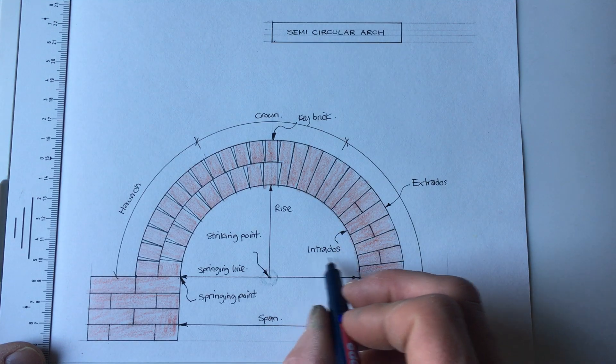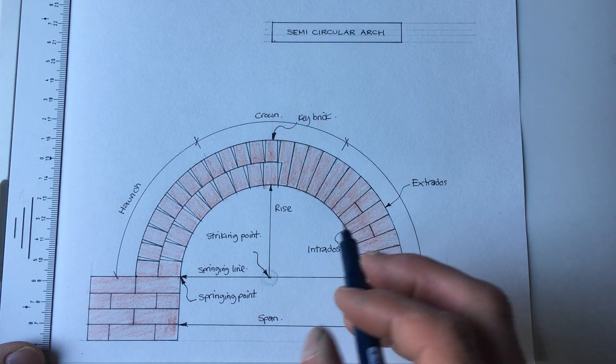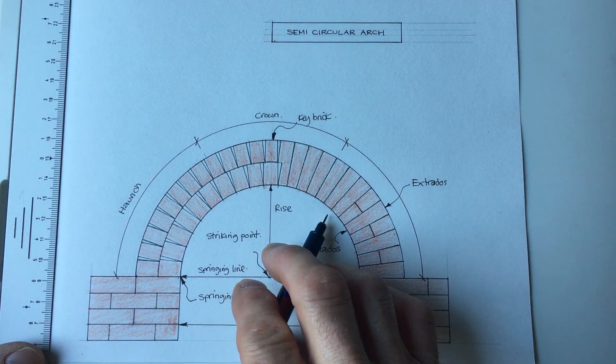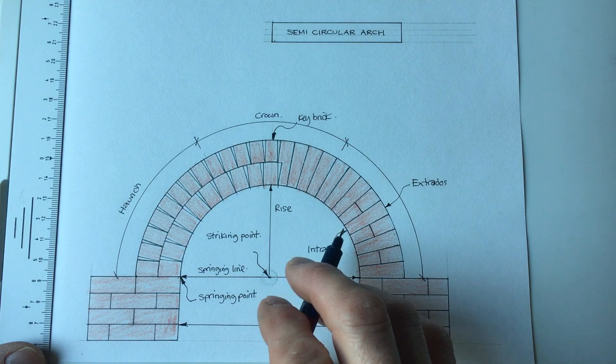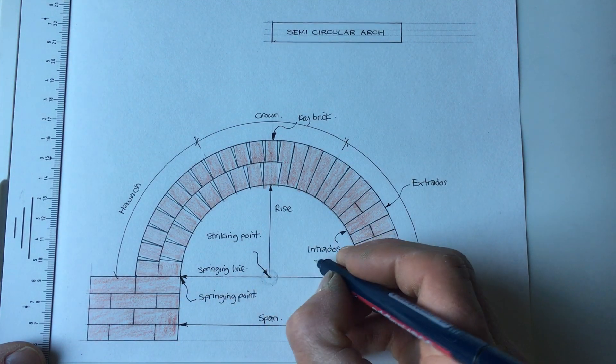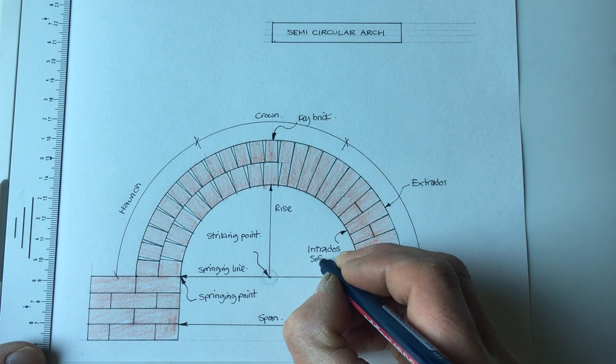And just talking about the intrados as well, when you're actually looking at this on a drawing, it's the intrados. But when you're actually standing under an arch and looking up, this would be the soffit. So I will write that in there as well: soffit.